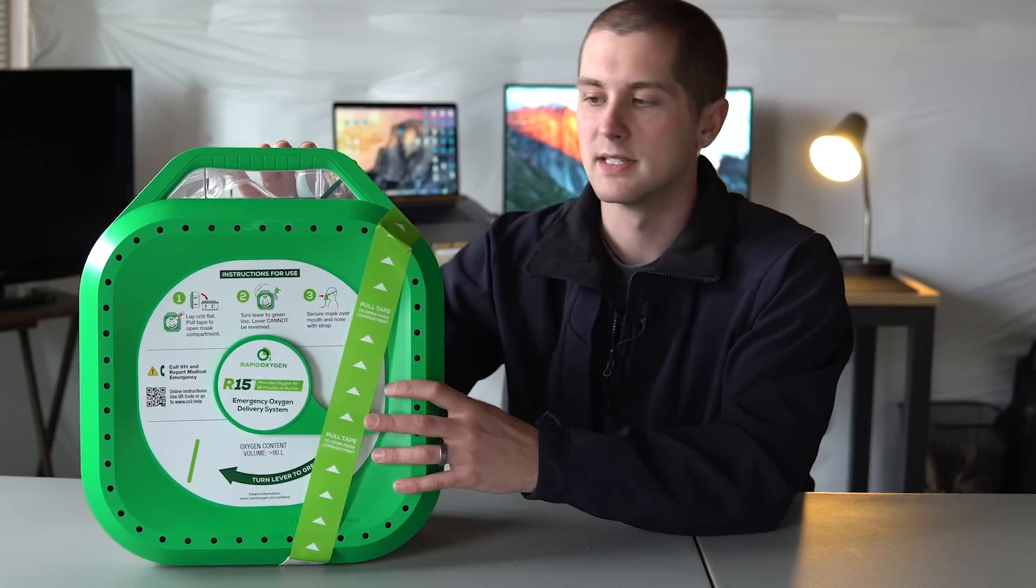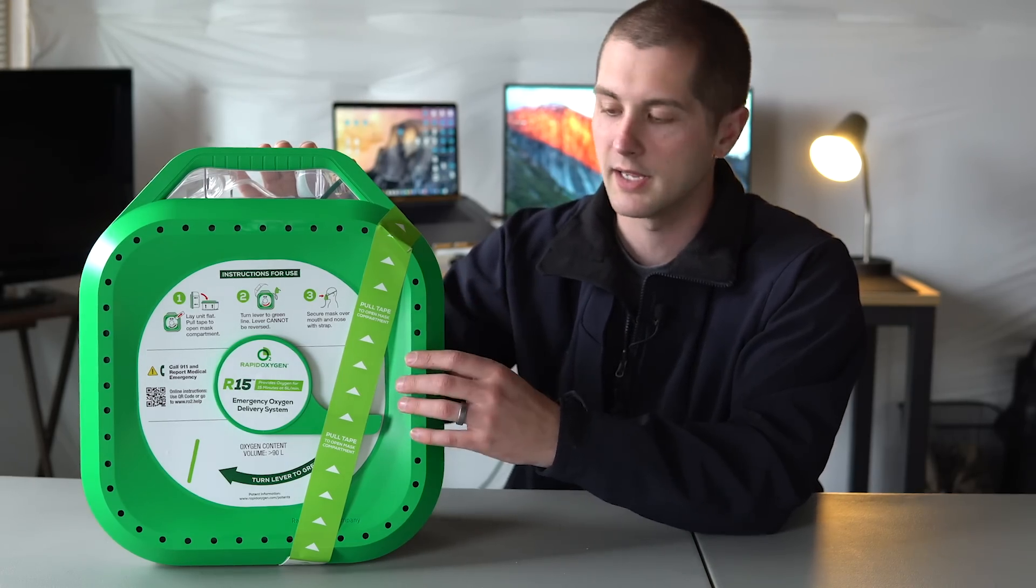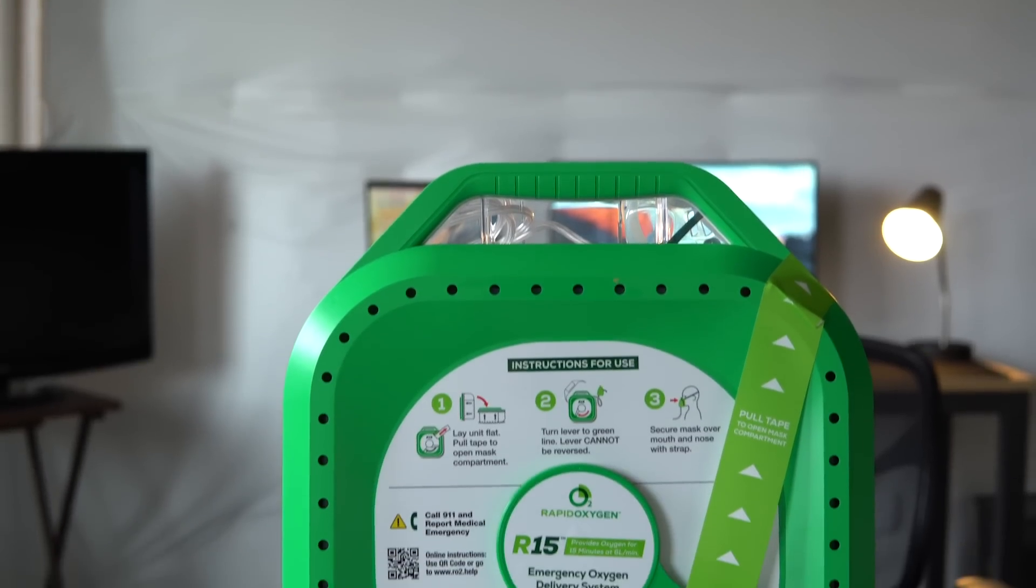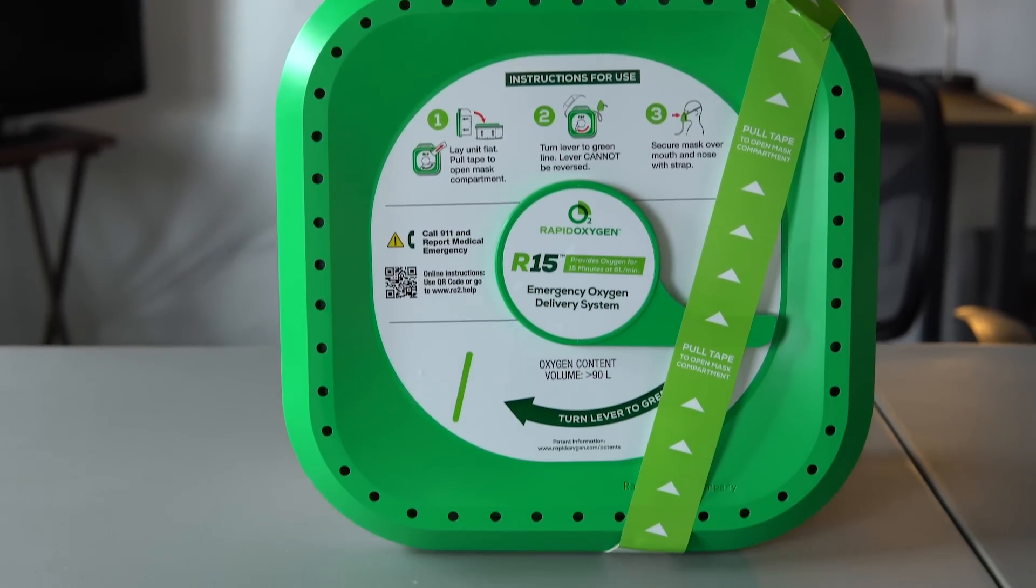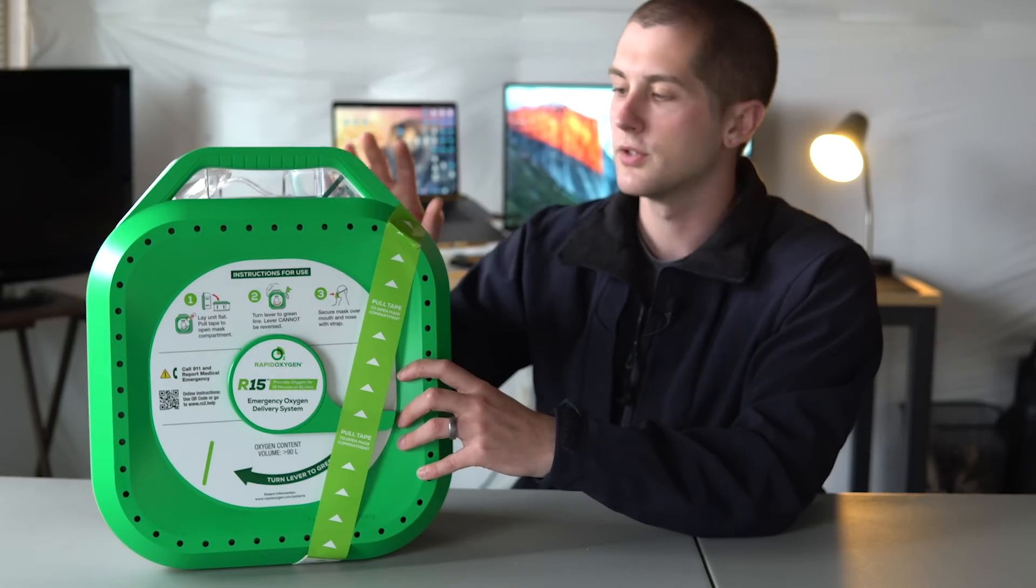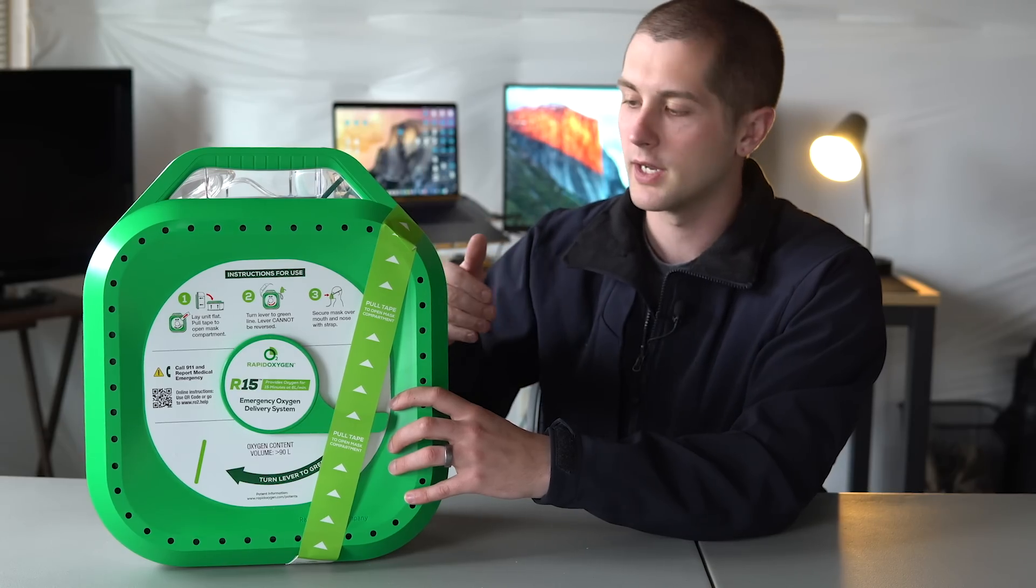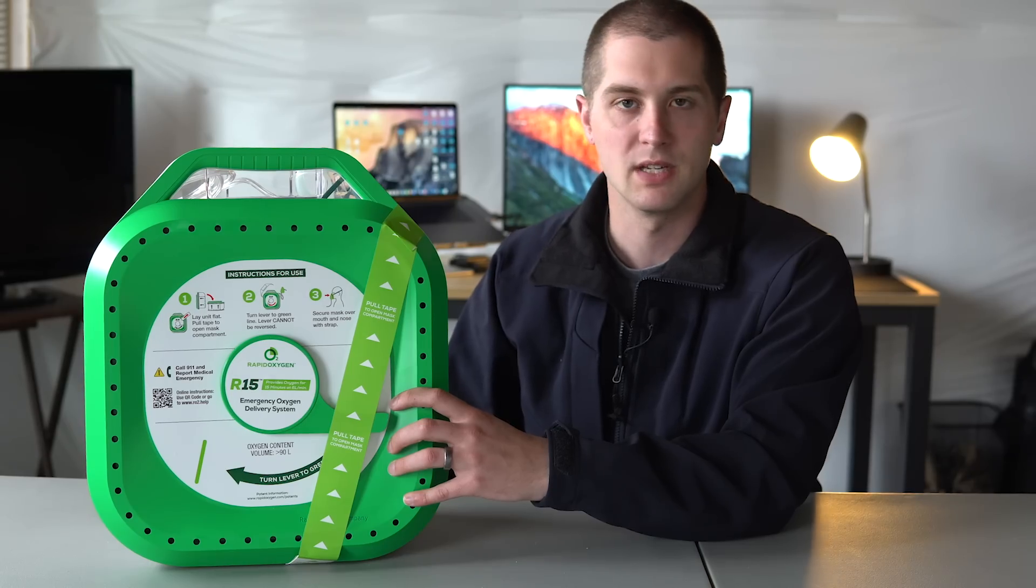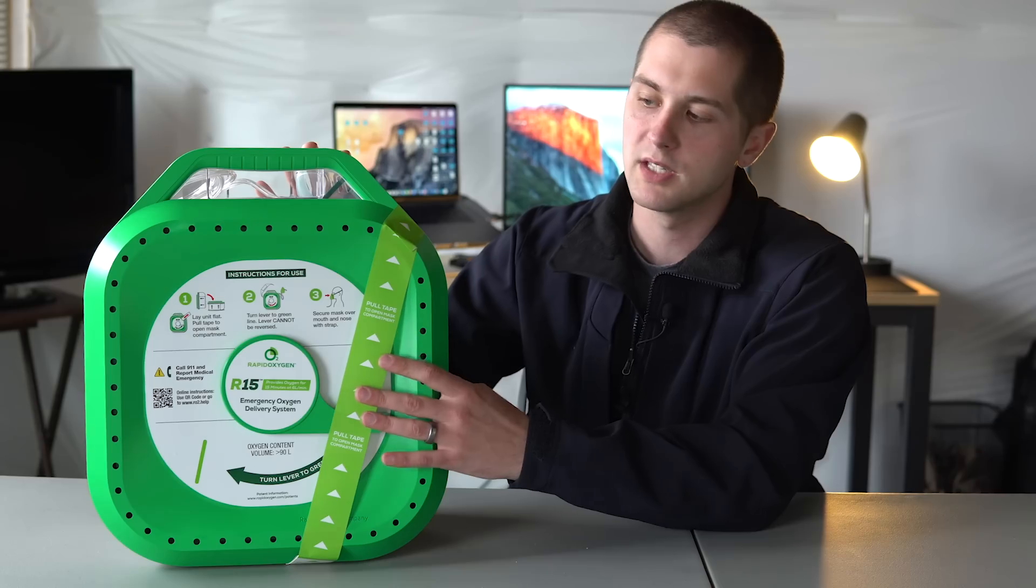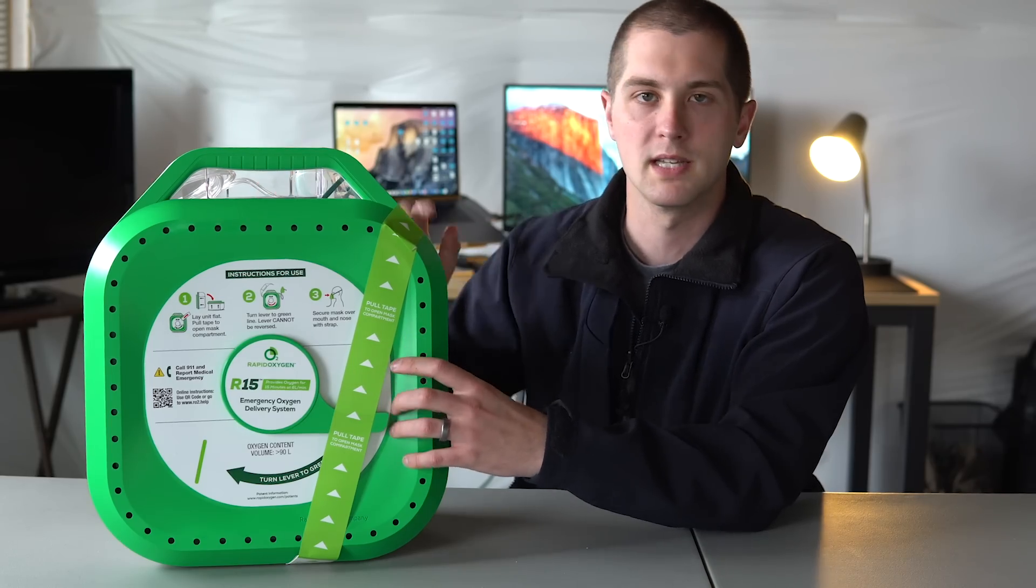Essentially what this device is, is this is made by Rapid Oxygen, like I said before, and they're a company based out of Connecticut in the United States. And this is the R15. So the R15 is designed to allow civilians with no training to bring this out and pull one lever, which I'll show you guys in a second, and provide the patient with six liters per minute of oxygen for 15 minutes. If you don't know, oxygen is measured in liters per minute for its dosage. This is technically a medication, but because this is basically an automated system, this falls under the same laws that an AED does.